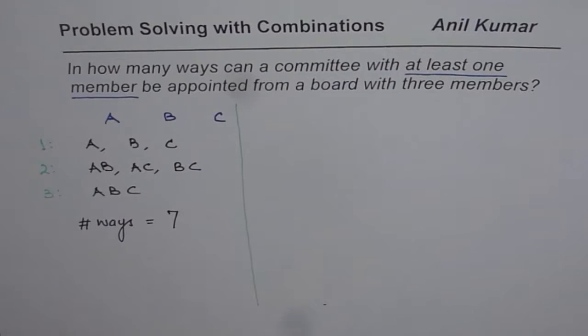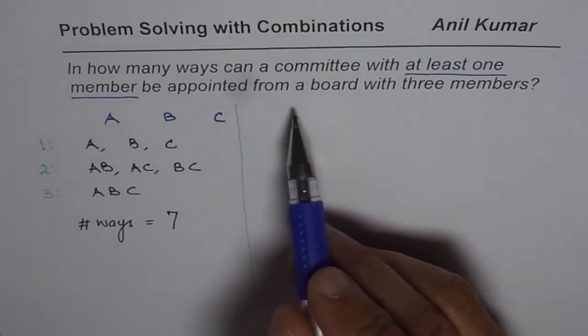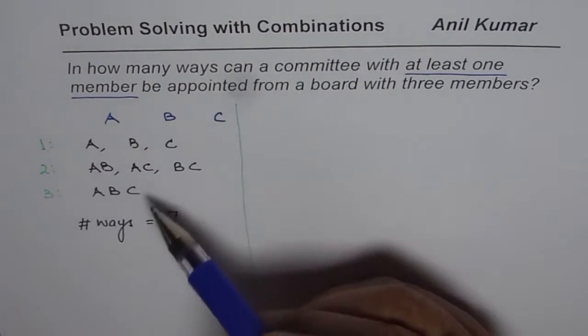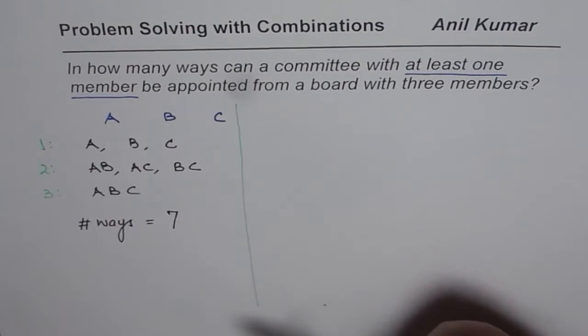Now in this particular case what you notice is that the total number of combinations have to be given from three distinct members. Now these members when they form a group then their combinations should be treated separately. Now let us try to understand another way of doing the same question so that we can solve similar questions where the number of members in the committee are large. So that will make this process very tedious.